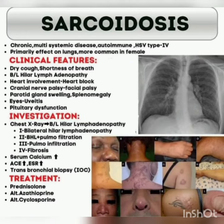Assalamu alaikum, dear doctors. In this video I am discussing sarcoidosis. Sarcoidosis is a chronic multi-systemic autoimmune disease — associated with Epstein-Barr (herpesvirus type 4) — that primarily affects the lungs and is more common in females.